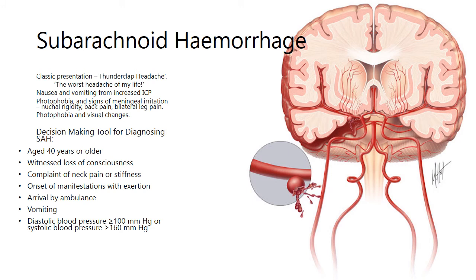Next on our list is subarachnoid hemorrhage. Part of the classic presentation is the thunderclap headache — a very specific onset where headache happens extremely rapidly, usually while exercising, doing something active, or even during sexual intercourse. Patients will frequently describe this as the worst headache of their life. It tends to be posterior or at the base of the skull, with some neck stiffness. There is some overlap in signs and symptoms between subarachnoid hemorrhage and meningitis, and patients may also have back pain and bilateral leg pain.